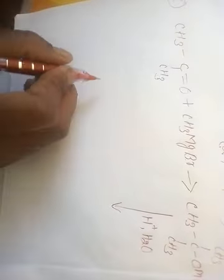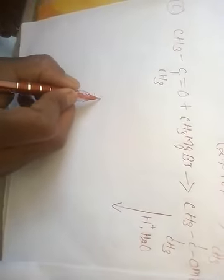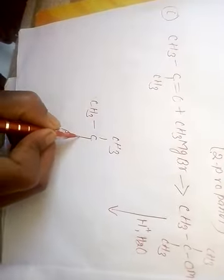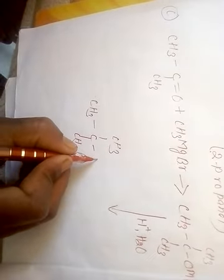When it hydrolyzes with H2O, it gives CH3-C-CH3-CH3-OH, which is 3-degree alcohol.